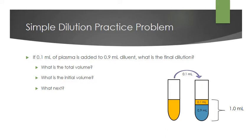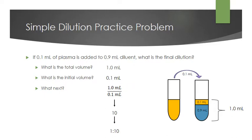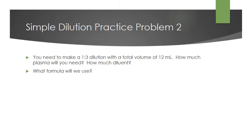With this problem, we start with the total volume: 0.1 plus 0.9 milliliters equals 1 milliliter. The sample volume is 0.1 milliliters. To determine the dilution factor, we divide 1.0 mL by 0.1 mL, which gives us 10 — that's our dilution factor. Since the dilution factor is just the reciprocal of our dilution, we can determine that our final dilution is 1 to 10.